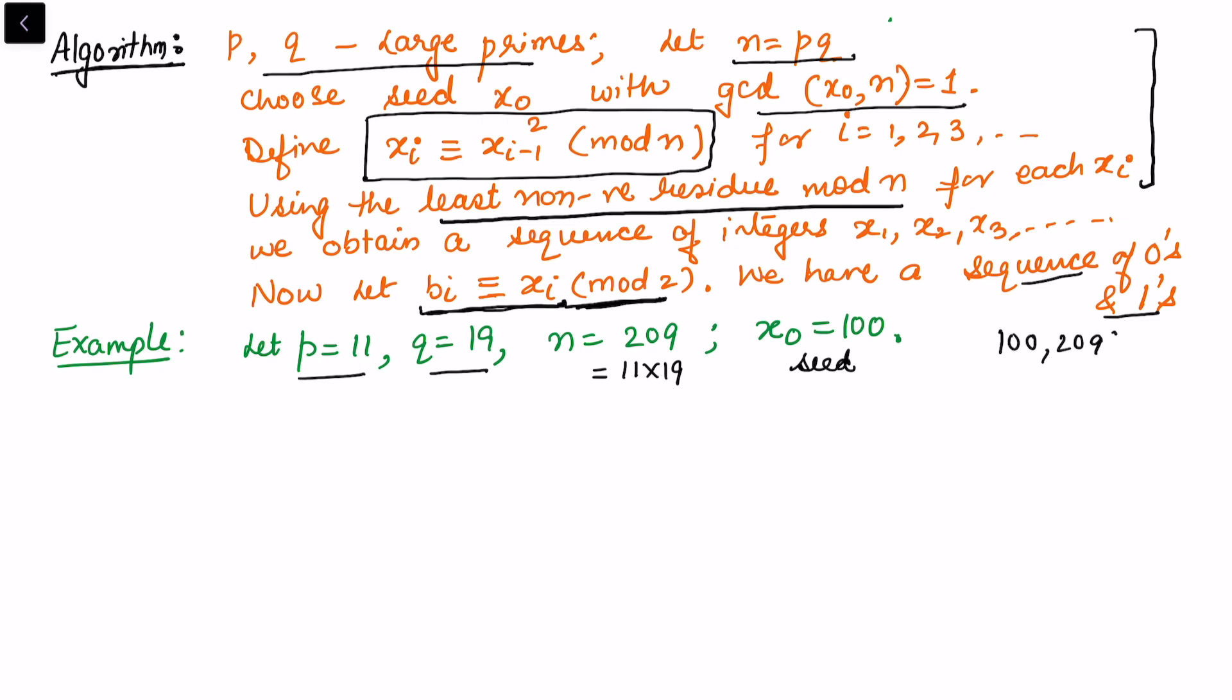can find the first x1. To find x1 we see that we can put x naught square - x naught is congruent to 100 square - and this I want to calculate what is the least non-negative residue here with respect to modulo 209. So now we can note that